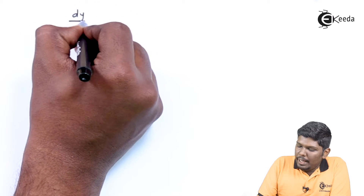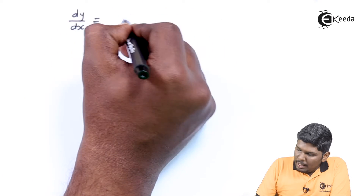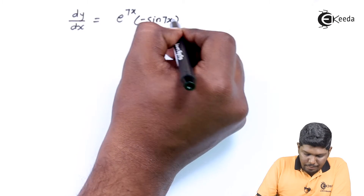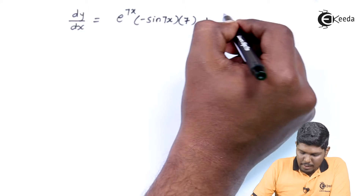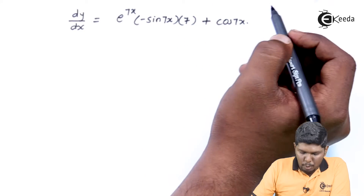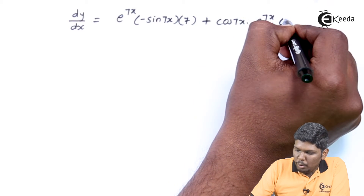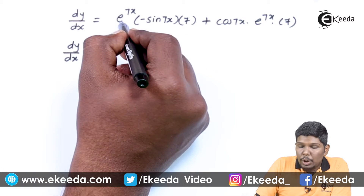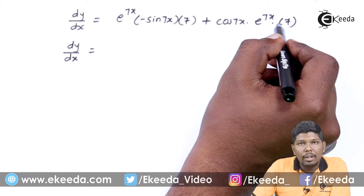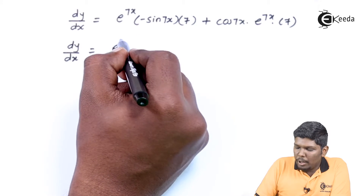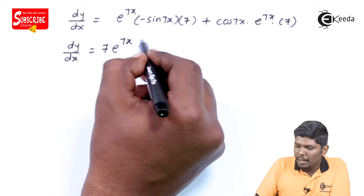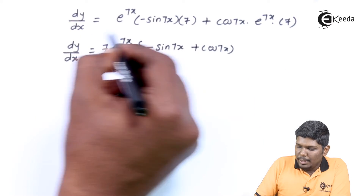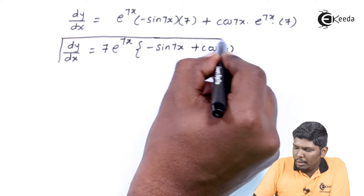So we have dy/dx equals e raised to 7x into minus sin 7x into 7, plus cos 7x into e raised to 7x into 7. To find the final answer, we take e raised to 7x into 7 as the common part from both terms. Taking that common, we get: e raised to 7x into 7, times (minus sin 7x plus cos 7x). This is the derivative of the given function.